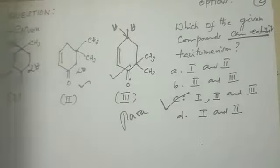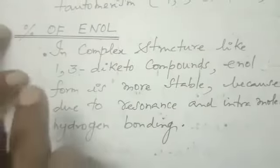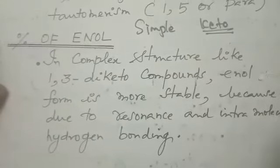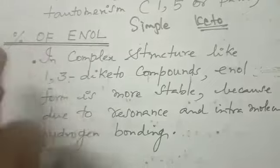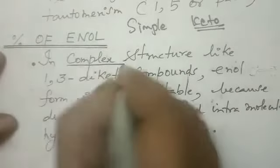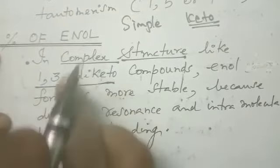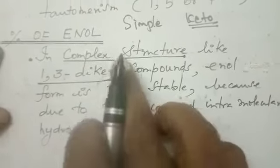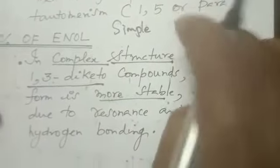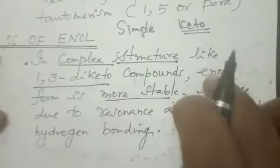Now moving to the next knowledge: percentage of enolic form. Usually, for a simple keto compound, the keto form is more stable than the enolic form. The point is about when the enol is more stable. When you are having a complex structure — like 1,3-diketone, where two ketone groups are at position 1,3 — that is labeled as a complex structure. In that category, the enol form is more stable. Keep it in mind: always keto is more stable when it is simple; when it is complex, enol is more stable.